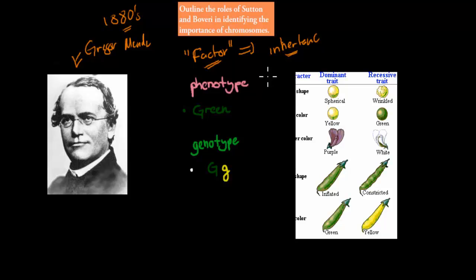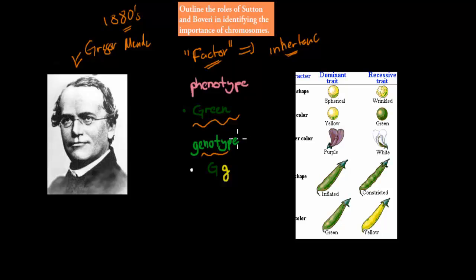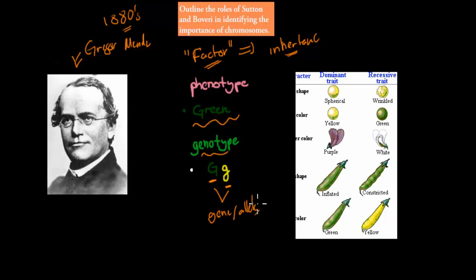Nowadays we know that these factors refer to genes, but he just called them factors. He found that there was a phenotype — the appearance. For example, if something was green, it had a phenotype of green. And the genotype consisted of these factors. He said every single trait was coded by two factors. For example, if the phenotype was green, one allele coded for green and another for yellow — though he didn't call them alleles yet, just factors.